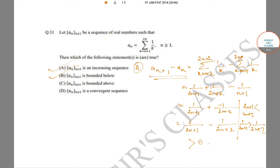If a_n is bounded above, then a_n is automatically convergent by the Bolzano-Weierstrass theorem, because it is also monotone. So we need to determine whether a_n is bounded above.